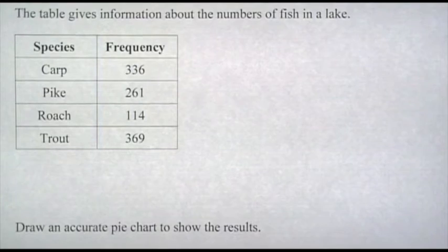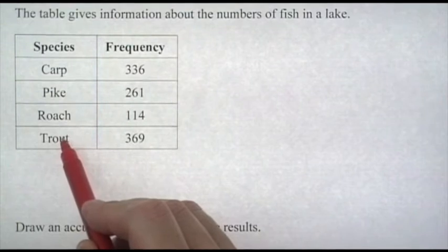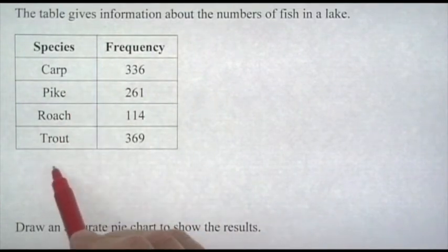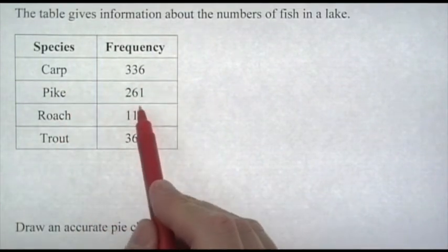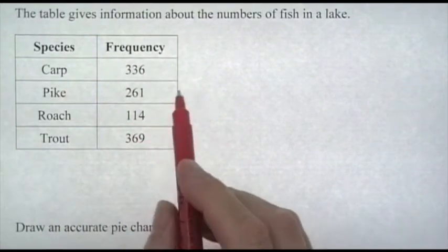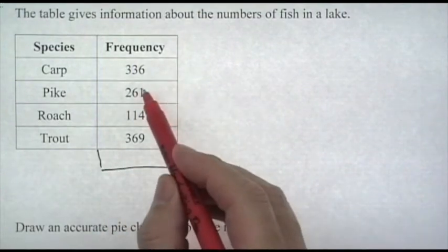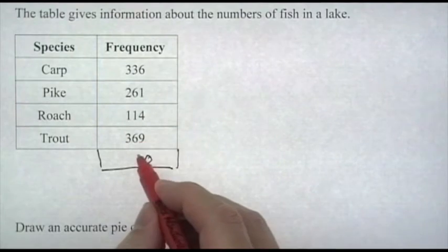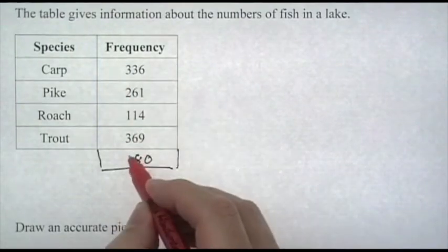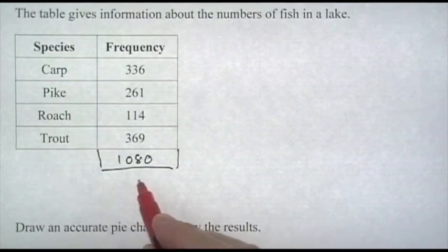This table gives information about the numbers of fish in a lake: carp, pike, roach, and trout. There's only four fish, so there's no need for another category. First thing we have to do is add them up to see how many fish there were altogether. That's 1,080 fish.